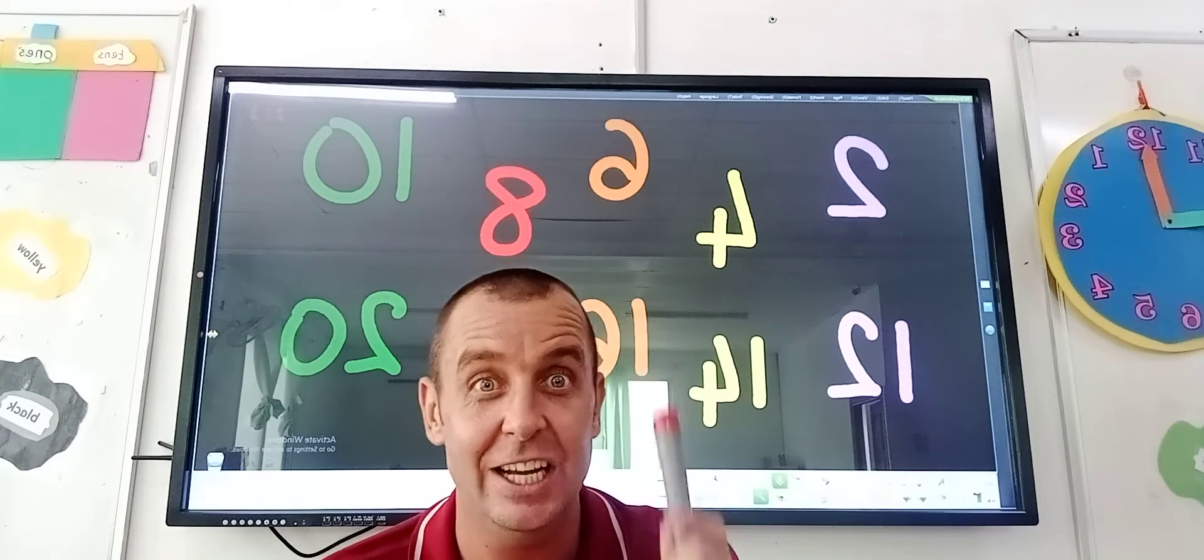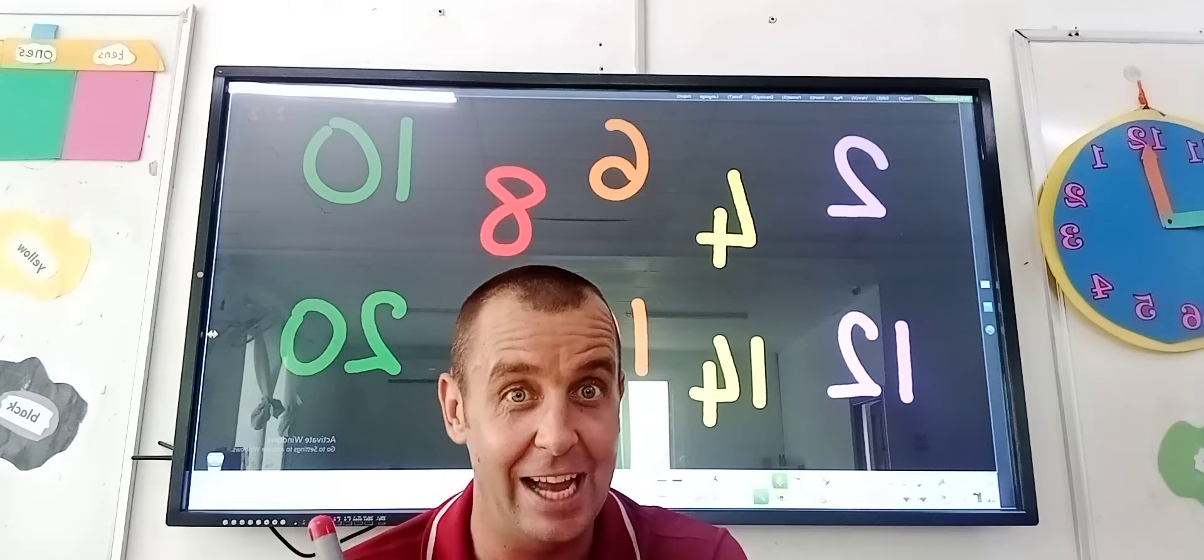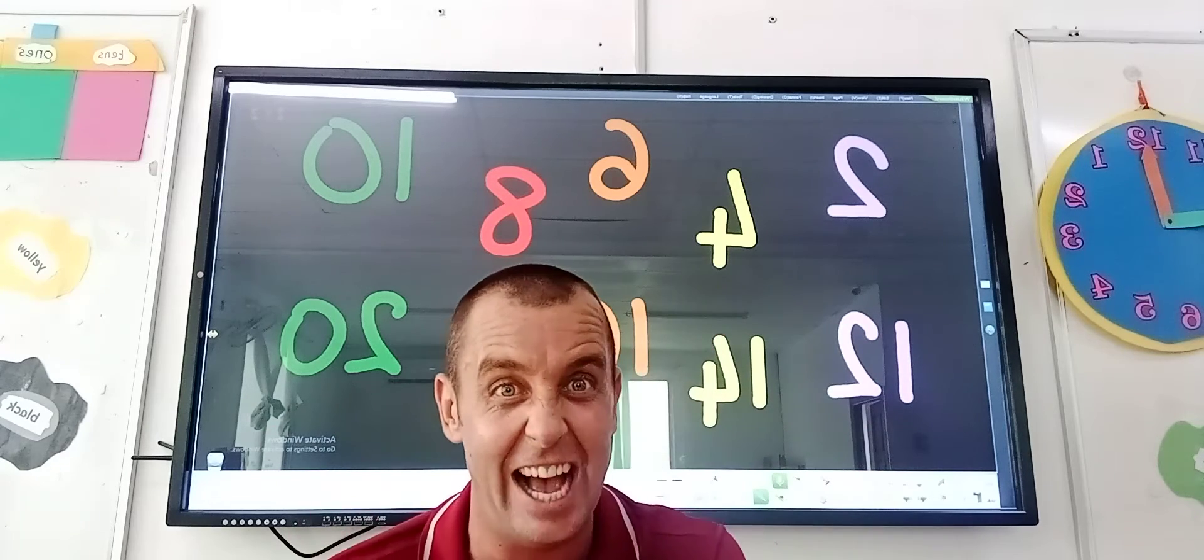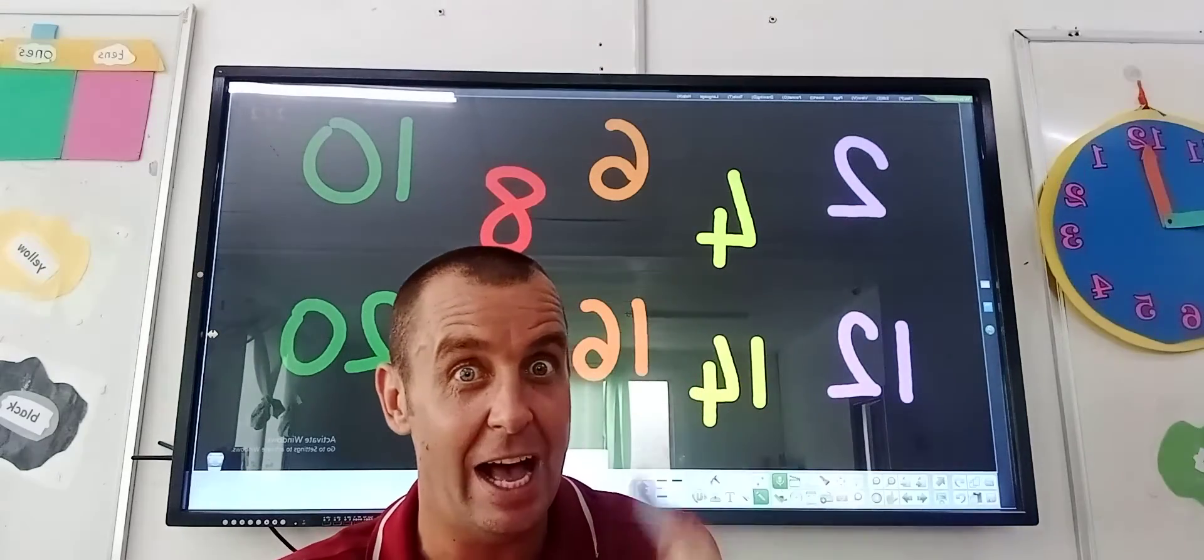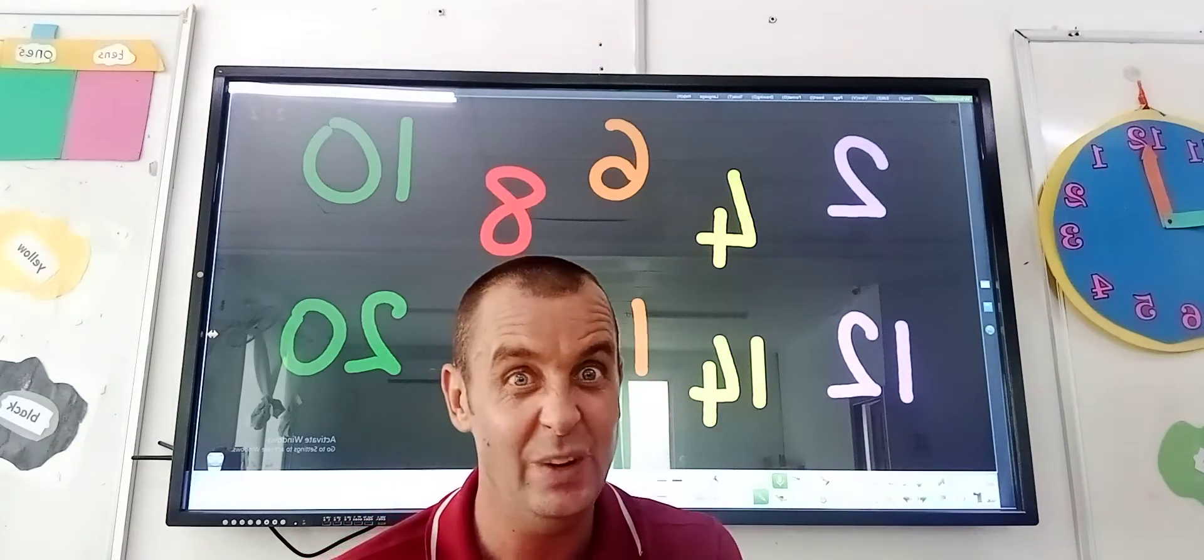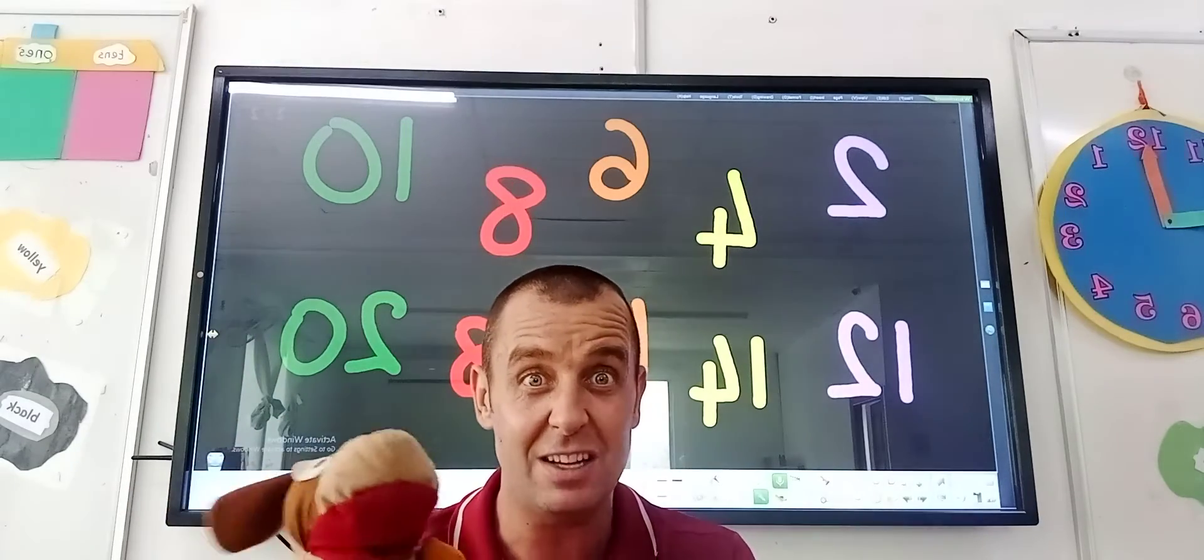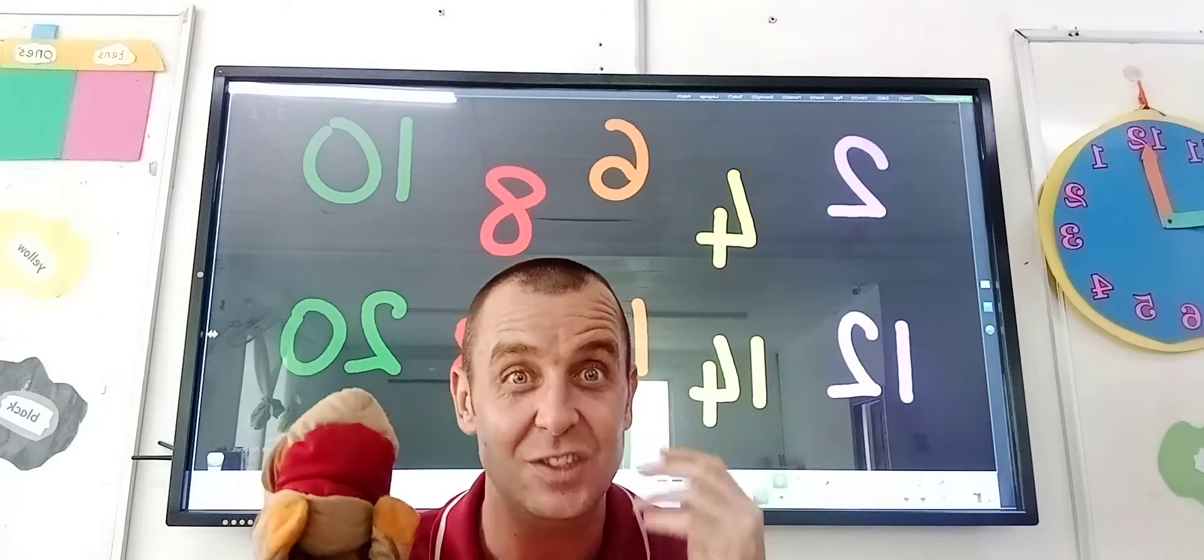So we're going to be counting two at a time. First I'm going to do it on the board behind me, and I hope you join in. Then I'm going to play a game behind me where we count in twos. And then Scooby's going to do it running around the classroom to find the blocks that I need to count in twos.